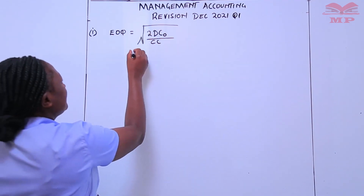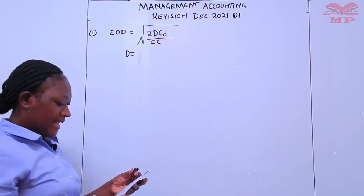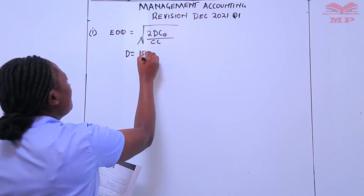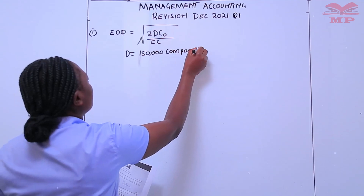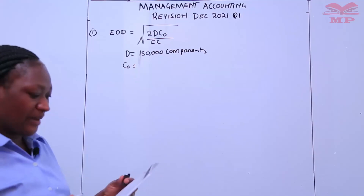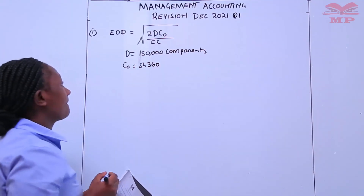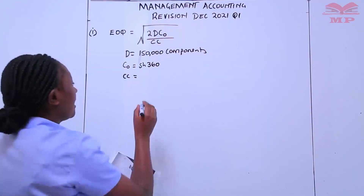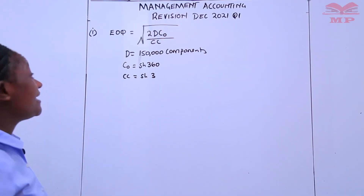So what we need to determine is what D is in the question. We were told that the annual purchases were 150,000 components. Then C_O is the ordering cost per order, which is 360 shillings per order. And we also have C_C, which is already given, and that is 3 shillings.